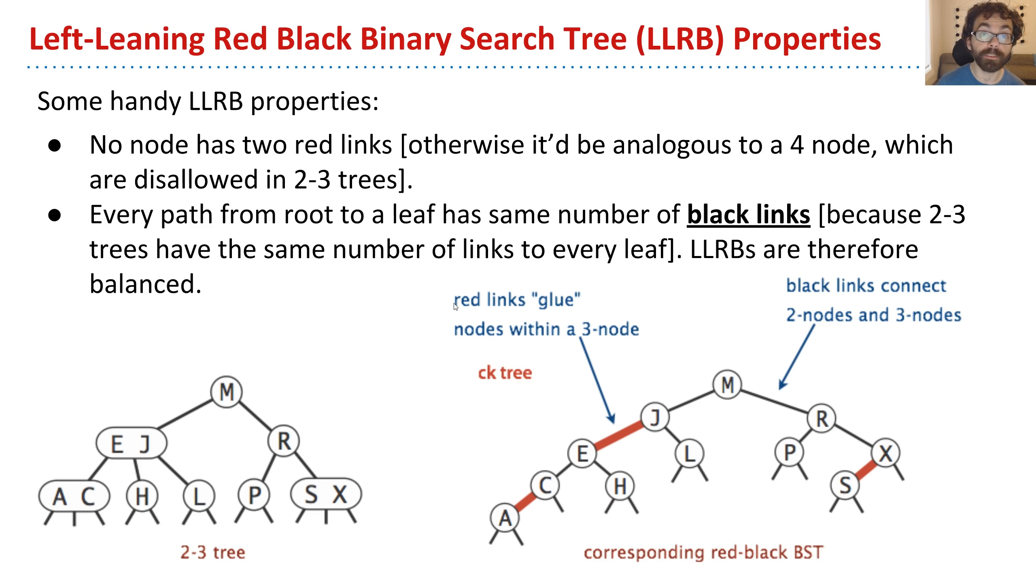So all of this we've said I can summarize in two really concise properties. So one property of an LLRB, for it to be valid, is no node can have two red links. Otherwise, it would be analogous to a 4 node, which we are not allowing. The other property we have is that every path from the root to a leaf has the same number of black links.